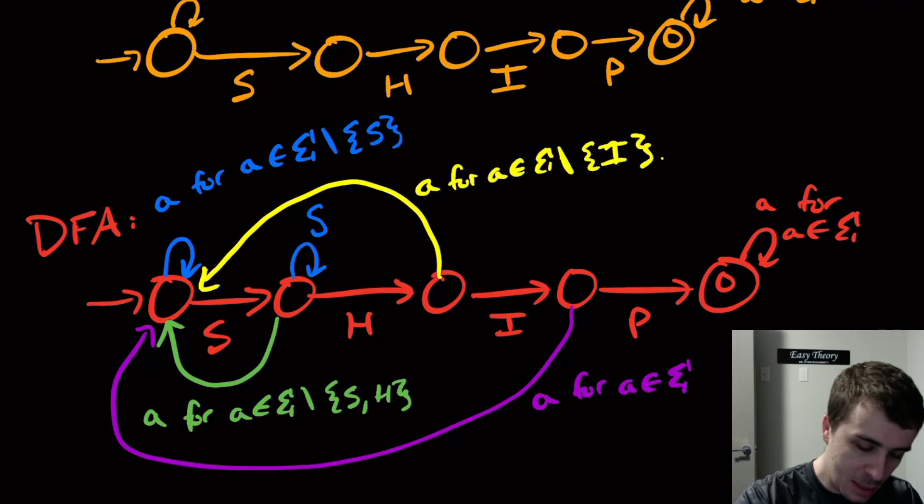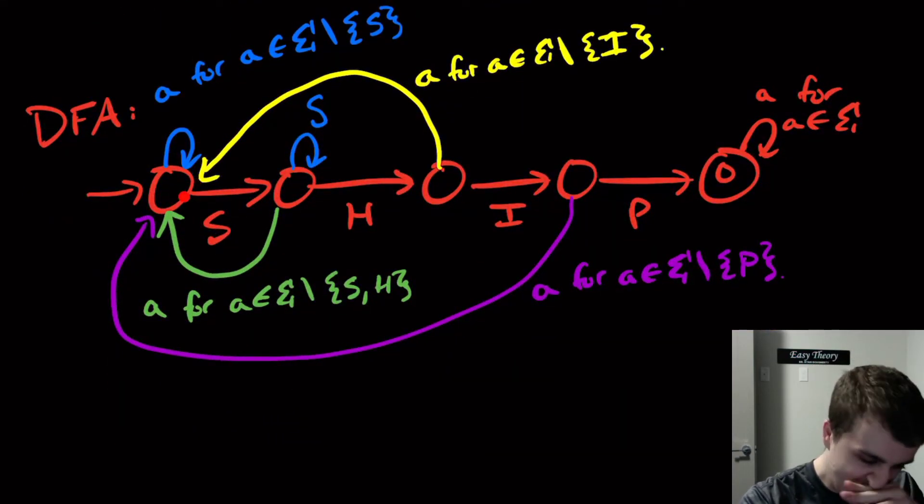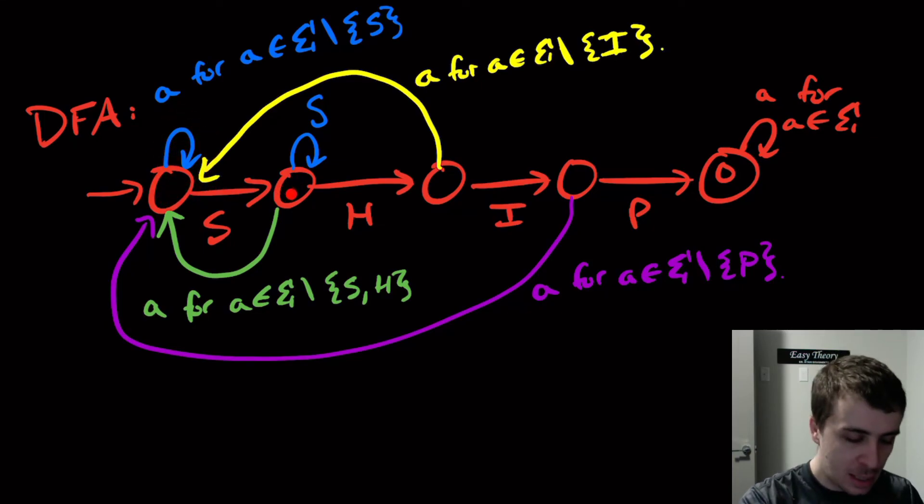Let's check. So this state has every single transition exactly once. There's an S and everything other than S here. This one has an S and H and everything other than S and H going back. This one has an I going over here and everything other than I. This one has a P and everything other than P. And then this one has every single thing, and you can verify that this is a correct DFA for figuring out whether there's a ship stuck in your string.